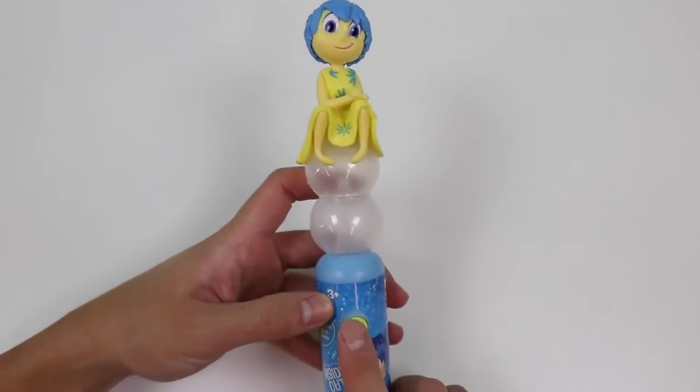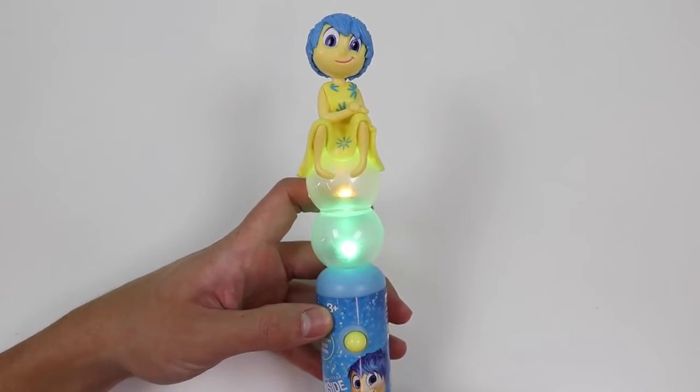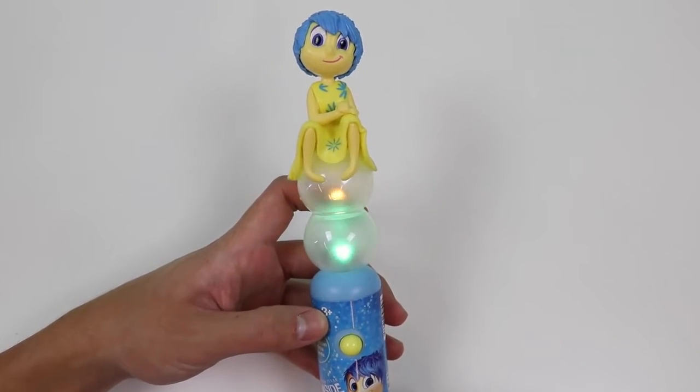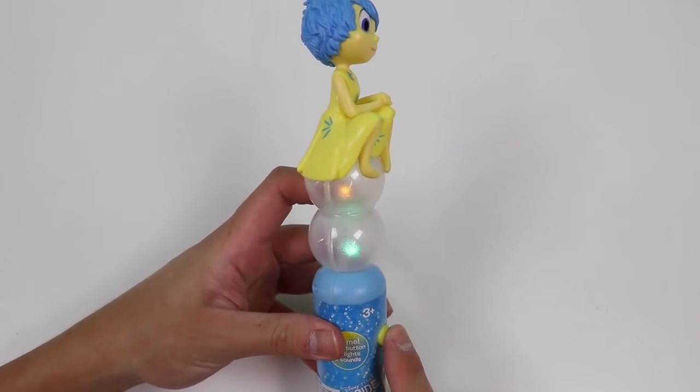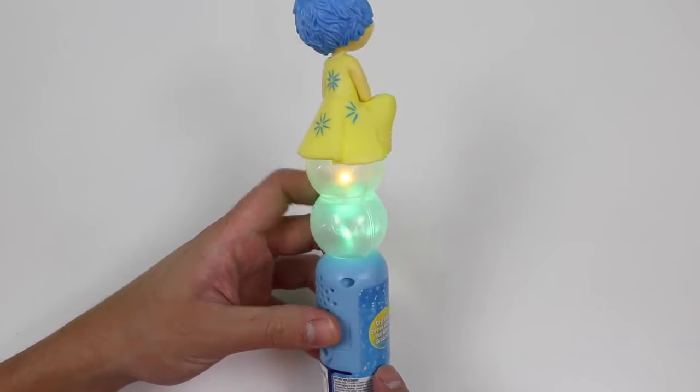Let's press this yellow button! Woah! The bottom is green and the top is red! And if you watch the movie, you know that these colors are emotions, so green equals disgust, and red equals anger!